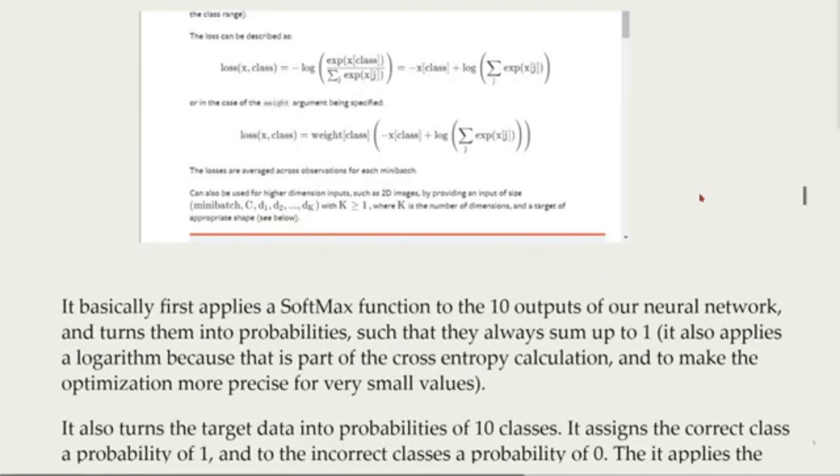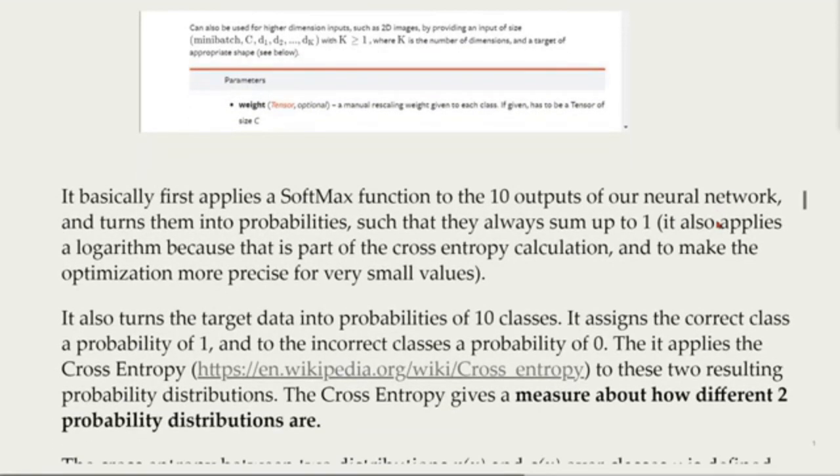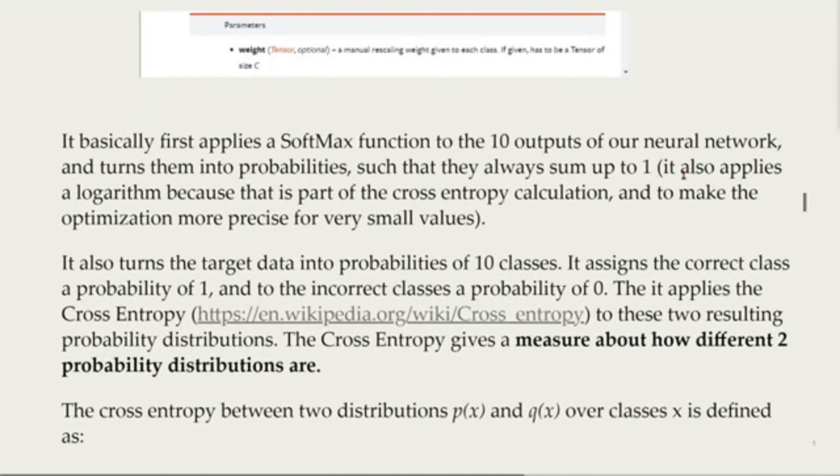It basically first applies a softmax function to the 10 outputs of our neural network and turns them into probabilities such that they always sum up to one. It also applies a logarithm because that is part of the cross-entropy calculation, and to make the optimization more precise for very small values. It also turns the target data into probabilities of 10 classes. It assigns the correct class a probability of one and the incorrect class a probability of zero. Then it applies cross-entropy to those two resulting probability distributions.